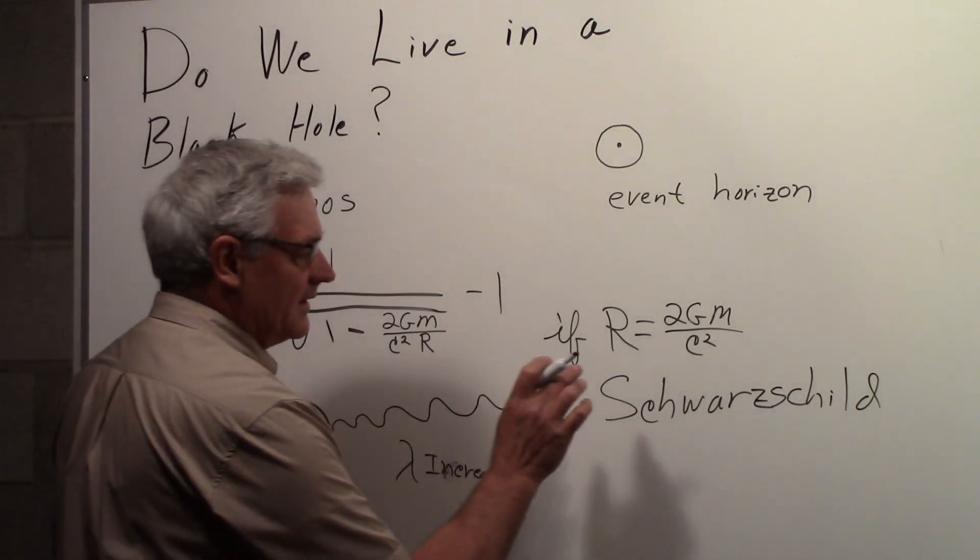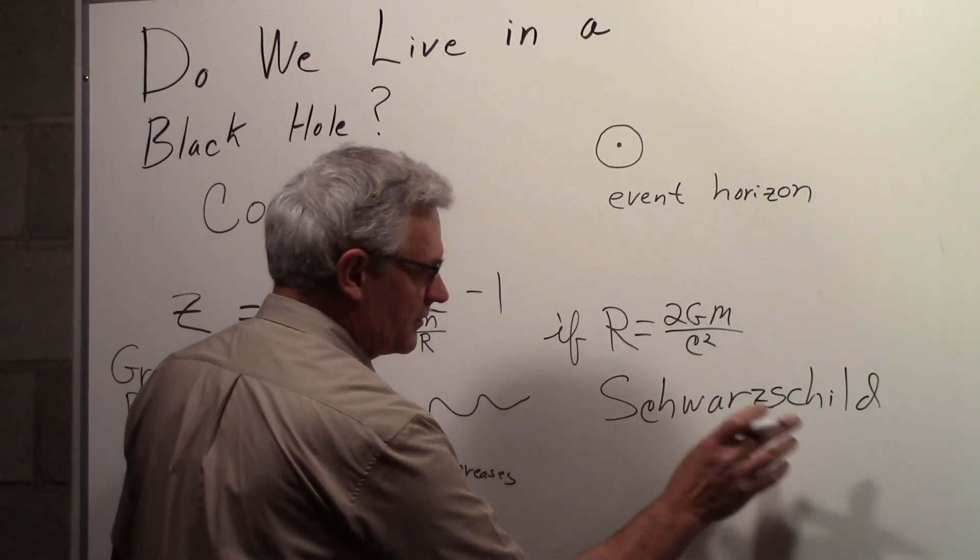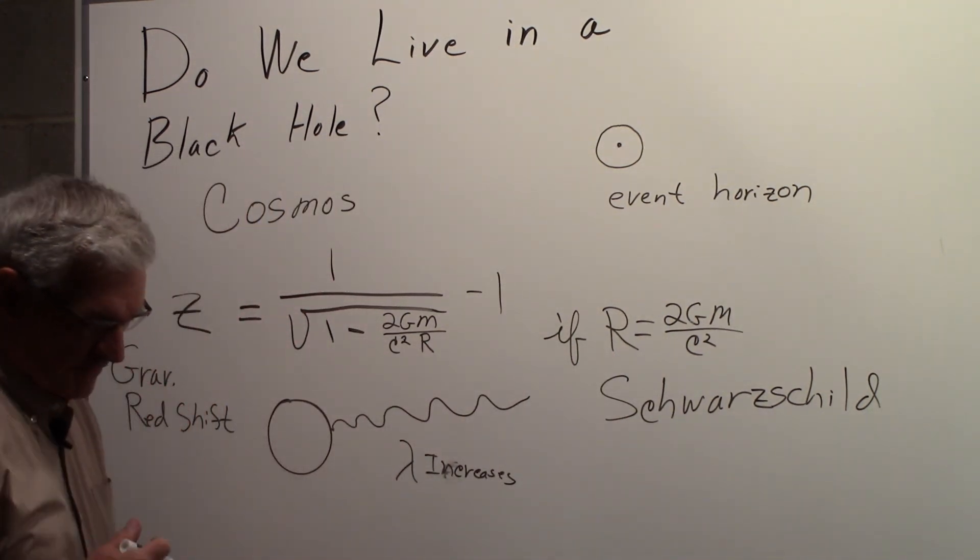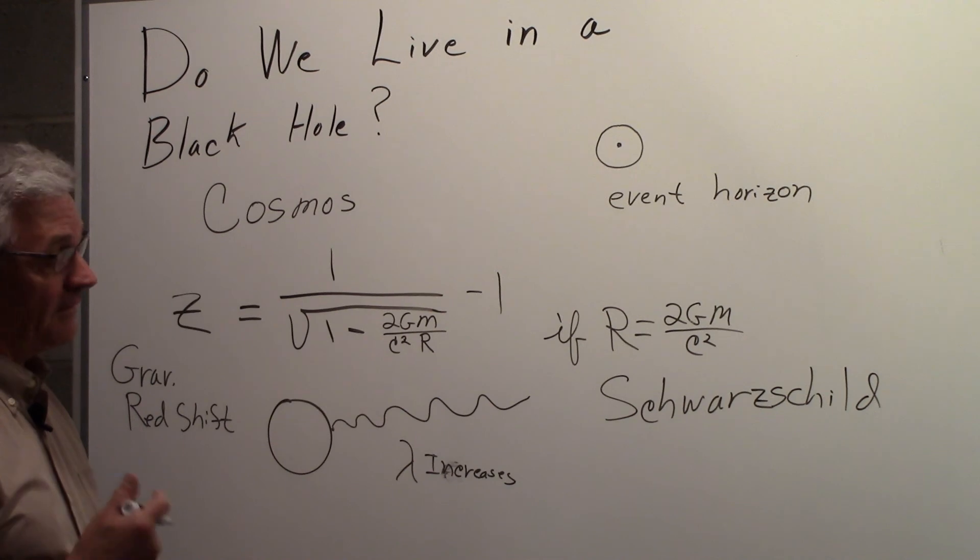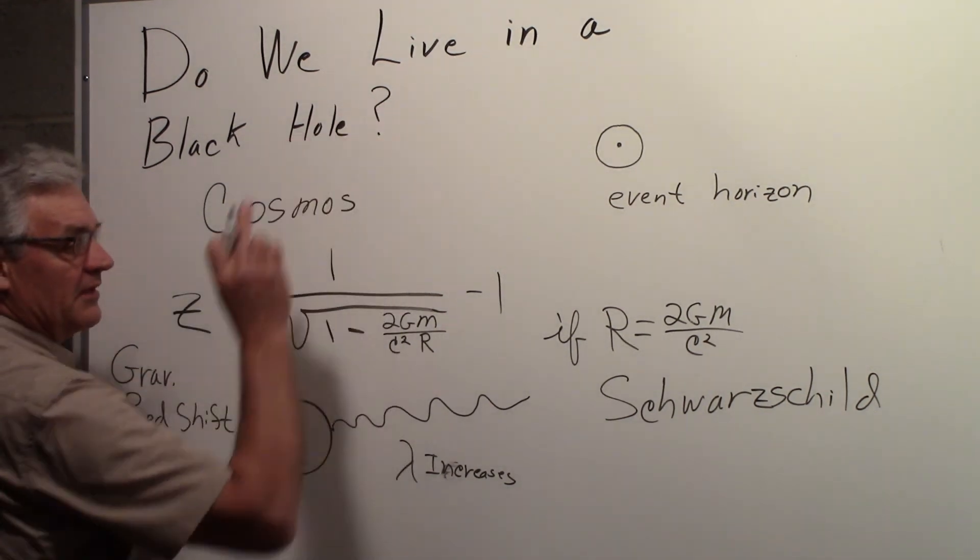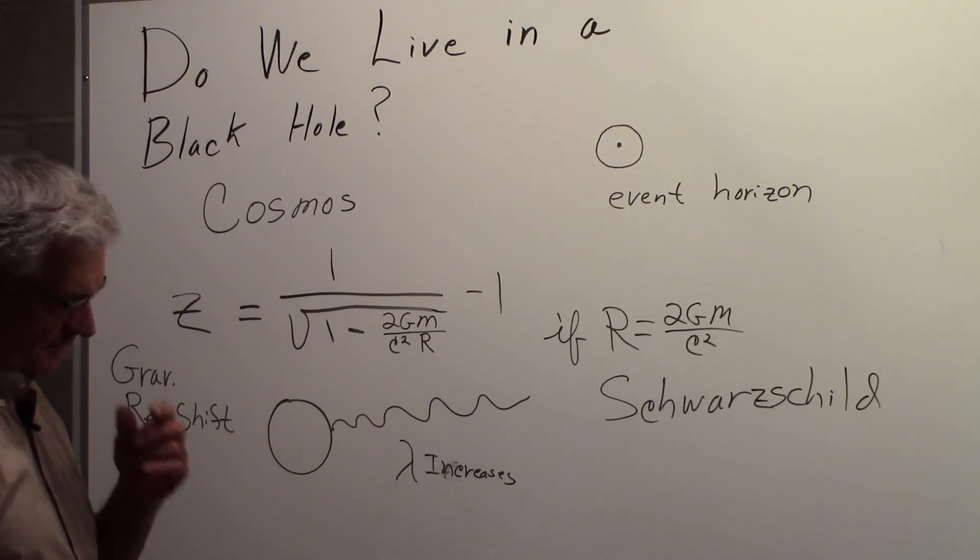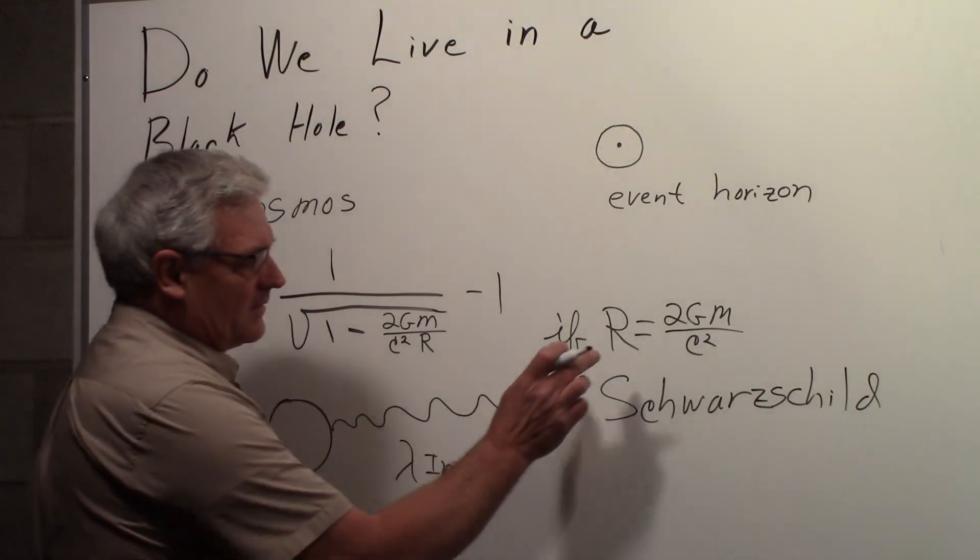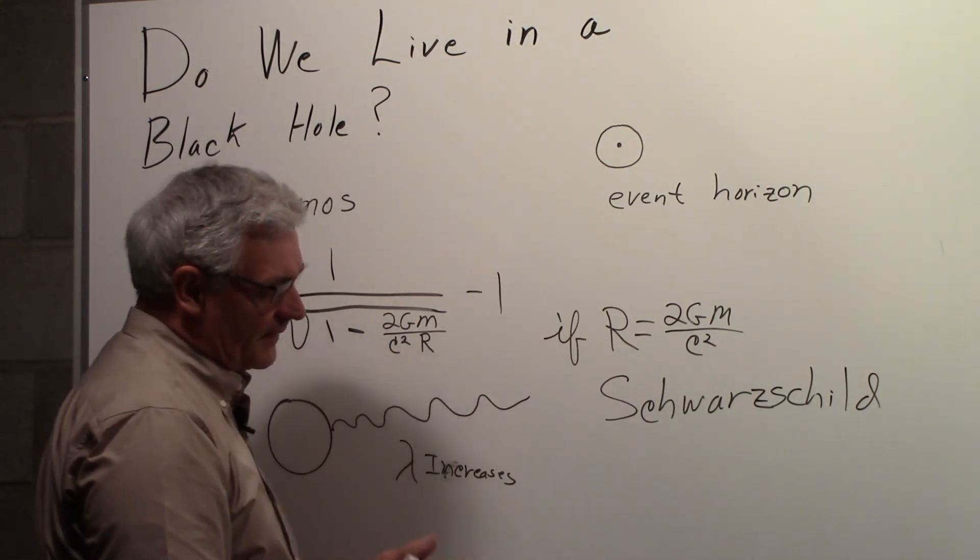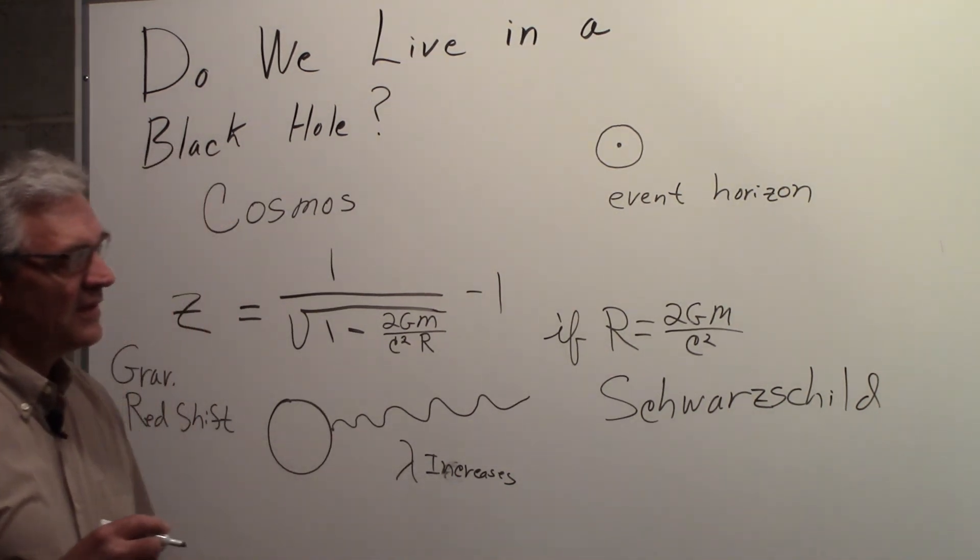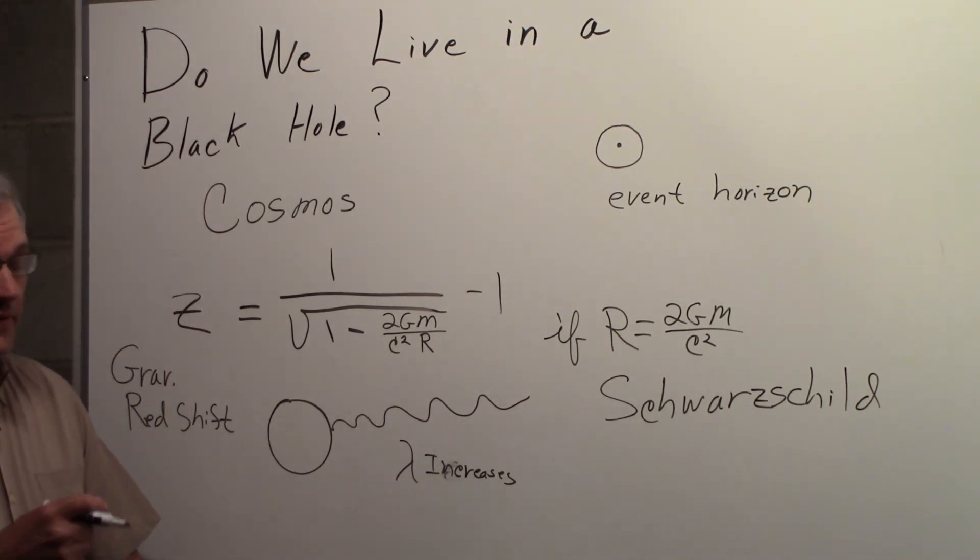If they had vanity plates in Pennsylvania that allowed that many letters, that's what my vanity plate would say: Schwarzschild. Anyhow, that's the Schwarzschild radius given by this r. So we could ask ourselves, if we want to begin by saying we do live in a black hole, well what is the radius of our universe? Can we come up with some number to figure out what the radius would be?